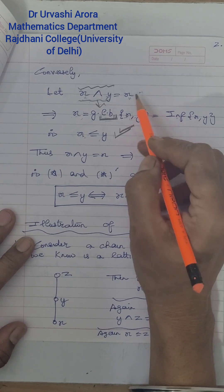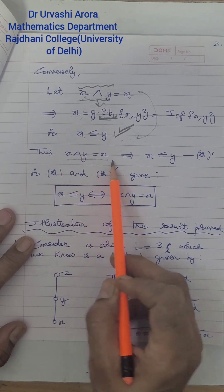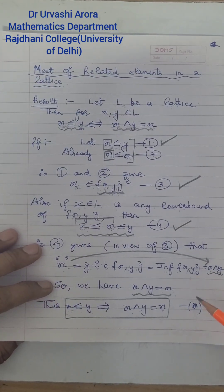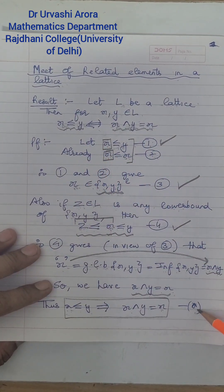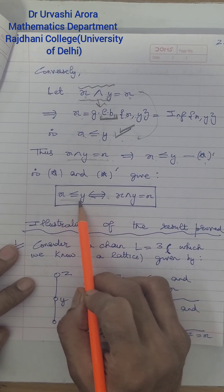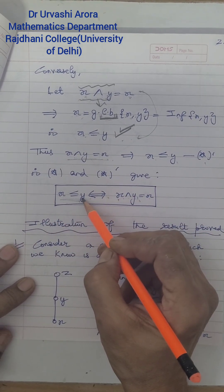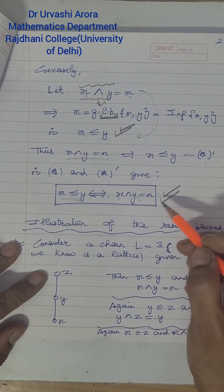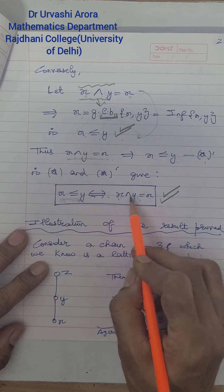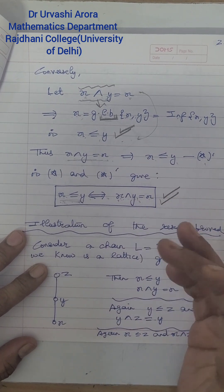So we started with the statement that X meet Y = X and obtained X ≤ Y. This is the converse part of the result, marked as star-dash. Combining star and star-dash gives a double implication: if X and Y are related, then X meet Y = X; and if X meet Y = X, then X is related to Y. This is a trivial result but it is used very frequently in other results.